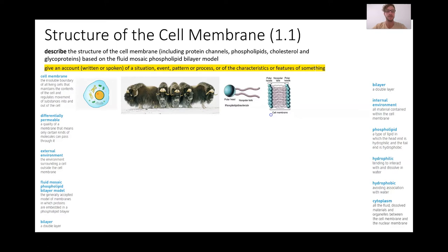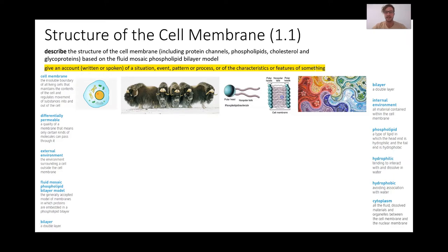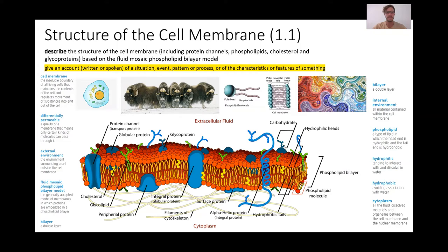We use the fluid mosaic model to represent our understanding of the structure and function of the membrane. Breaking that term down: fluid means it can freely move — this membrane is actually constantly shifting and moving. Mosaic, if you've ever seen a mosaic tile pattern, means it's made up of lots of different parts. In this representation of the membrane we can see, even though there's a lot going on, the membrane is made up of a double layer of phospholipids — a layer here and a layer here — with the tails creating this region where there's no water because the tails hate water.